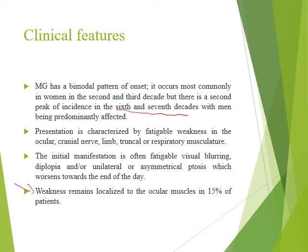Weakness remains localized to ocular muscles in 15% of patients — this is called ocular myasthenia. Whenever myasthenia gravis remains in the extraocular muscles only for more than two years, it is regarded as ocular myasthenia. Ocular myasthenia is benign compared to generalized myasthenia, and even the mode of management is different — if a patient has ocular myasthenia alone, there is no need to do thymectomy.